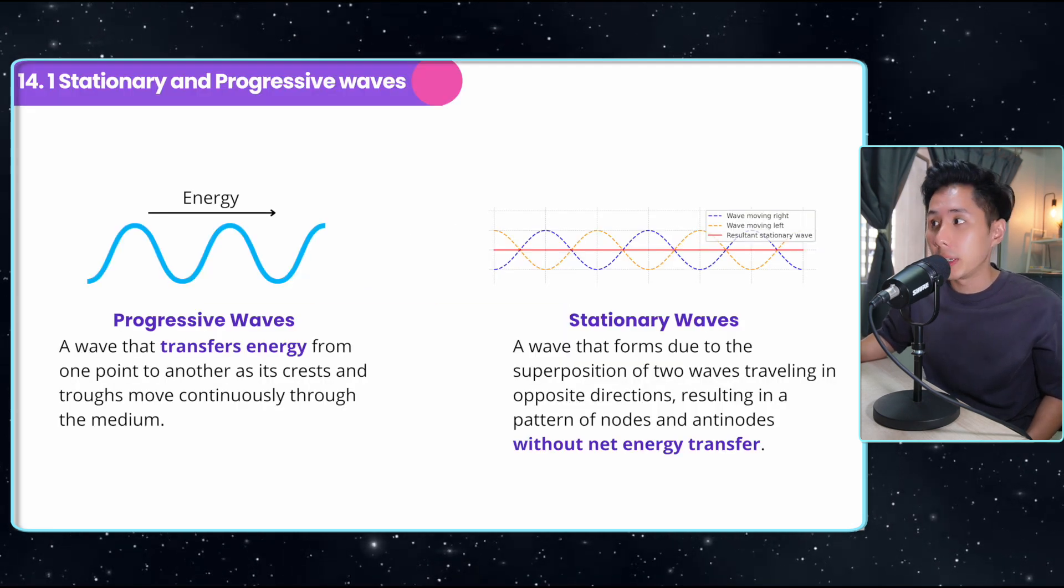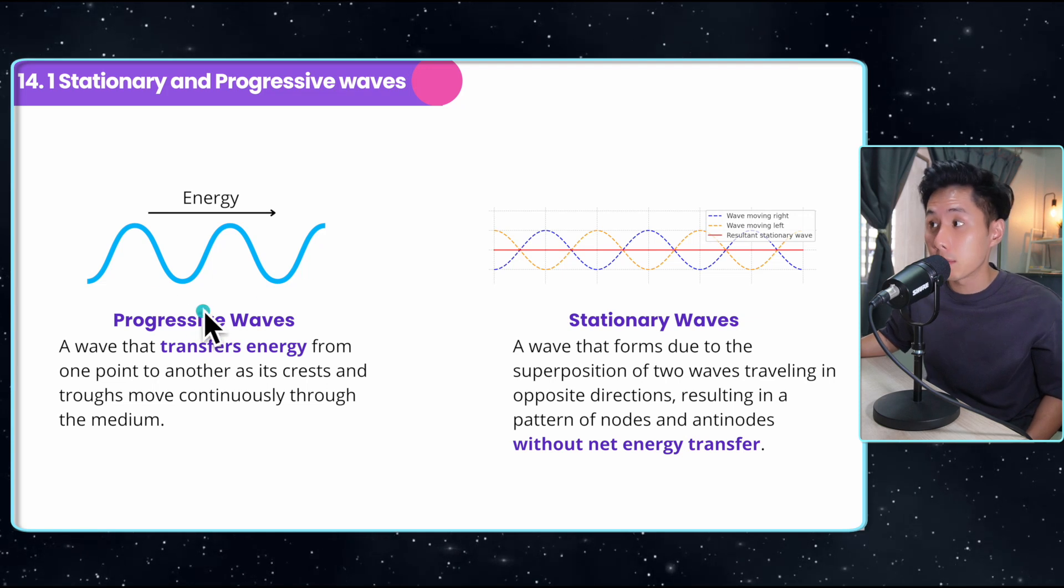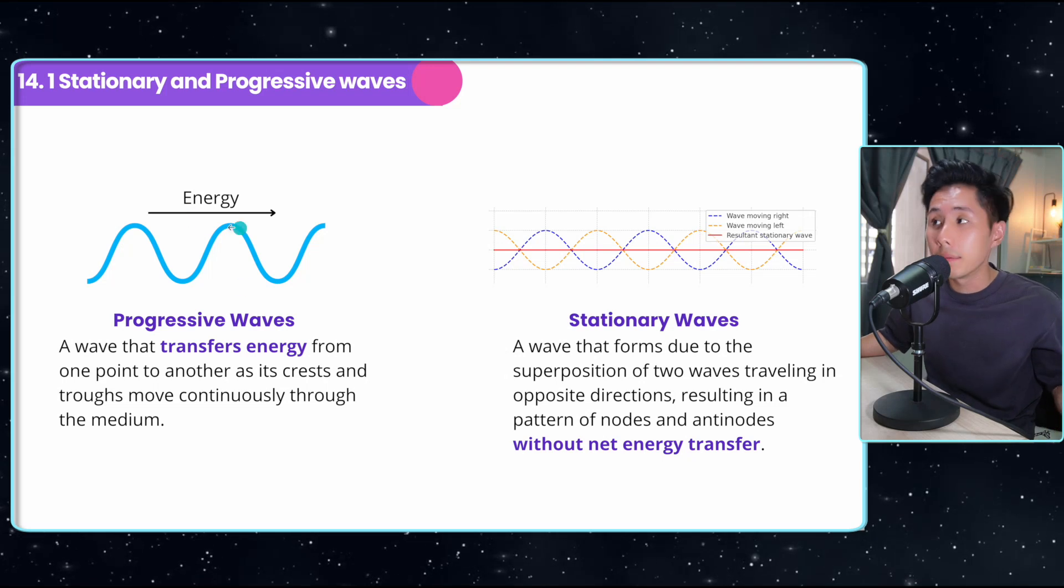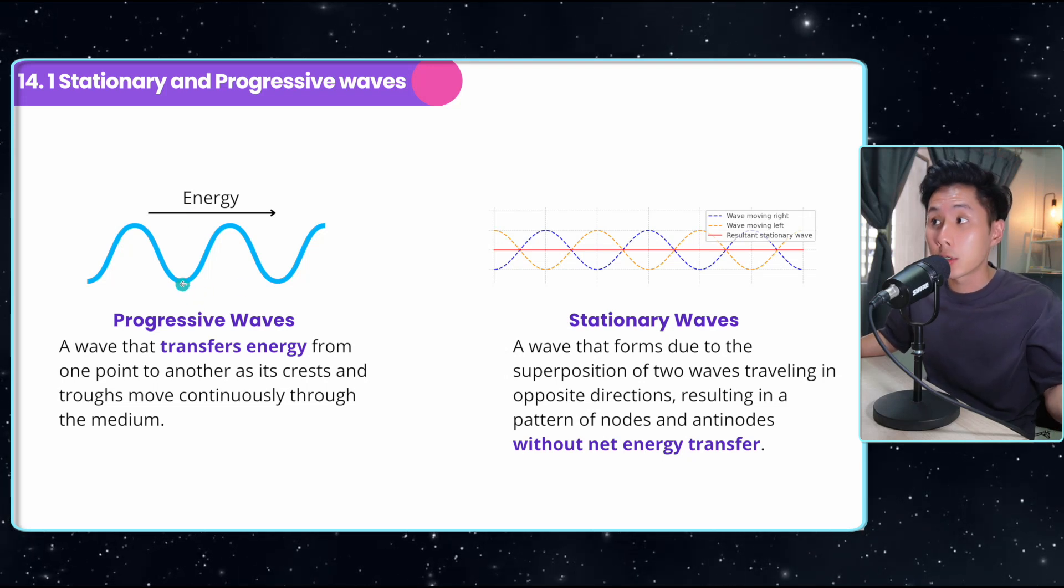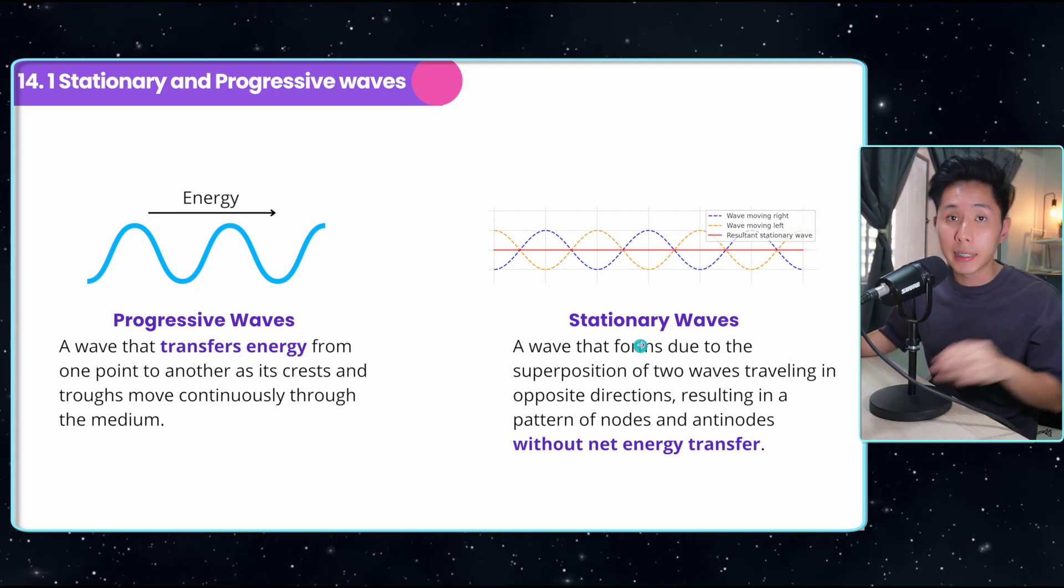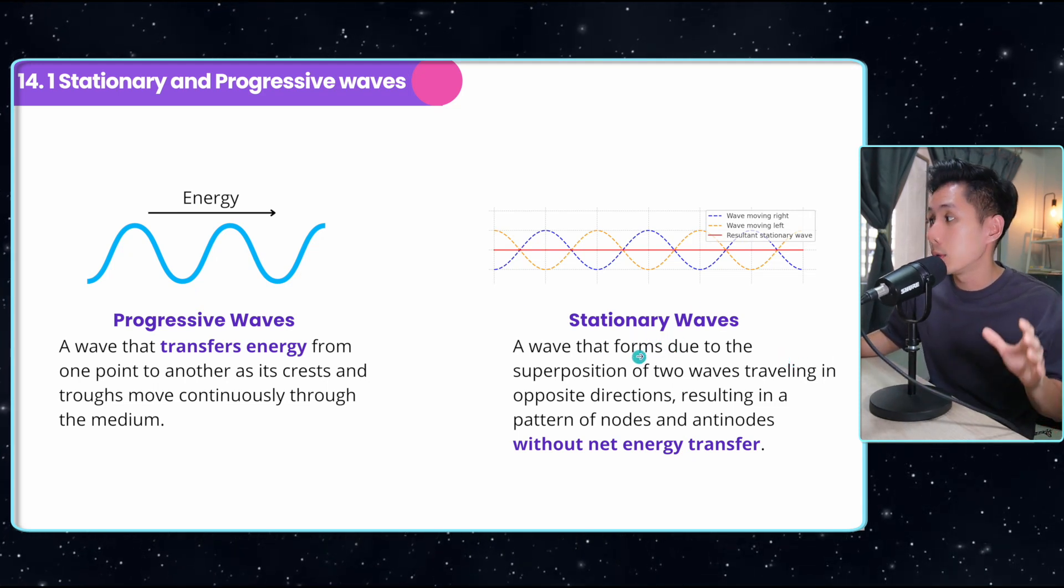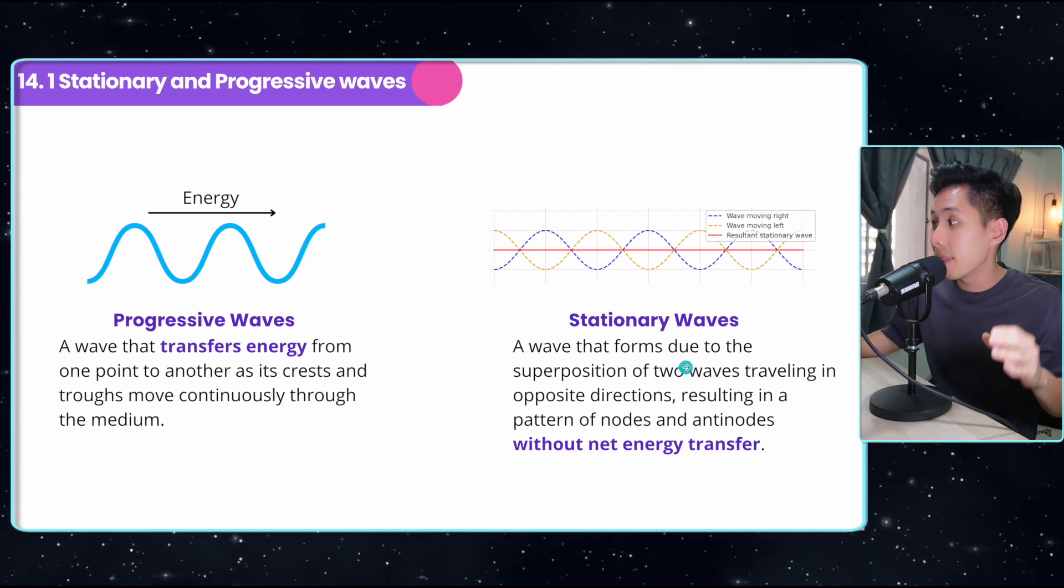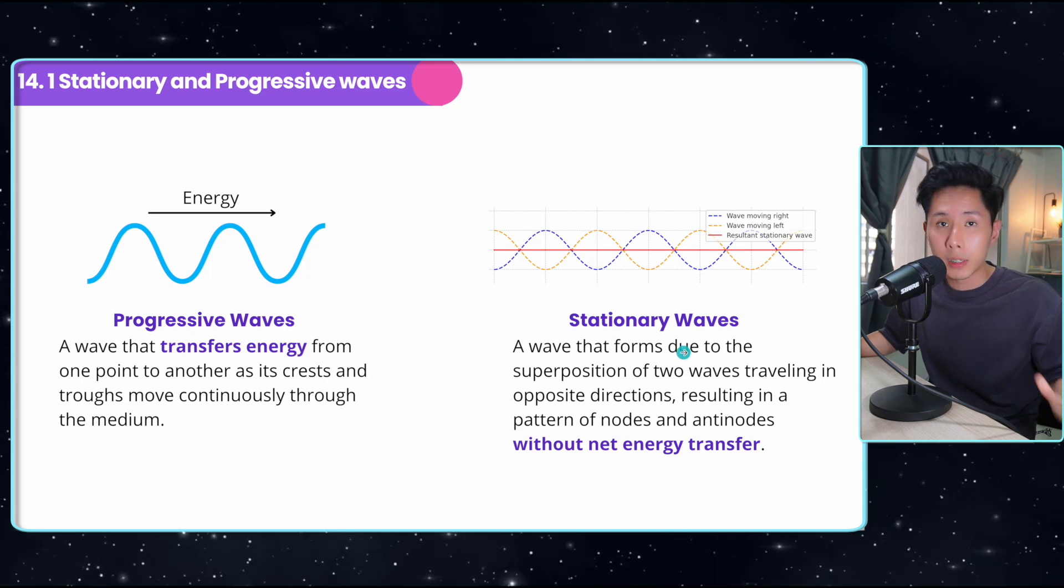Now let's look into the difference between what we learned in the last two videos, progressive wave, and this video, stationary wave. Progressive wave is the type of wave that transfers energy from one end to another. Whereas stationary wave is a type of wave that is formed due to the superposition of two waves. They are formed due to the superposition of two waves, and there is no net energy transfer during the process.